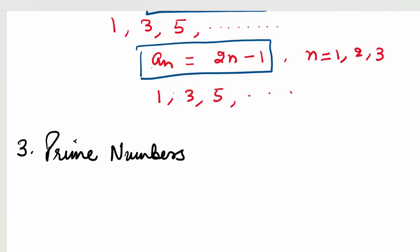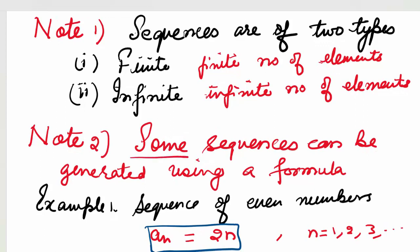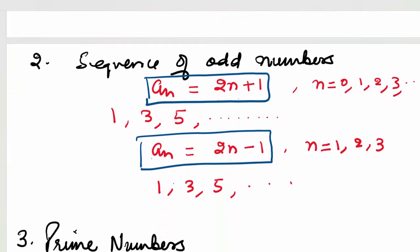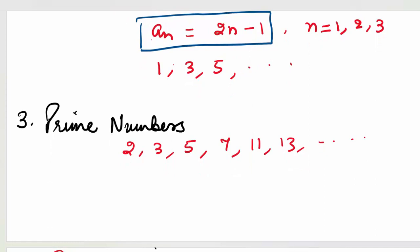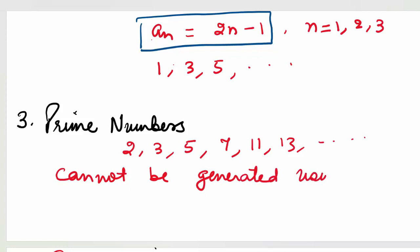There could be sequences where we don't have any formula. That's why we said some sequences can be generated using a formula. How about prime numbers? You know what prime numbers are: 2, 3, 5, 7, 11, 13. All these are prime numbers, but there is no formula to generate them. So prime numbers cannot be generated using a formula. This is also a sequence — the numbers are defined by a property rather than a formula.